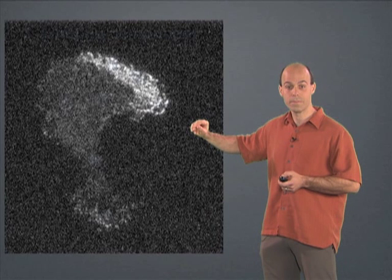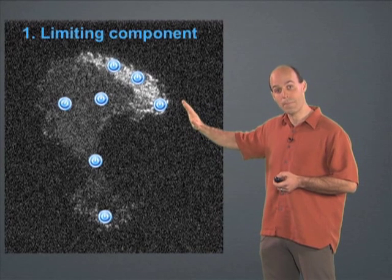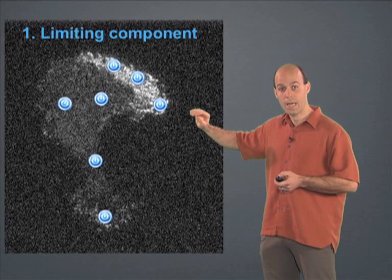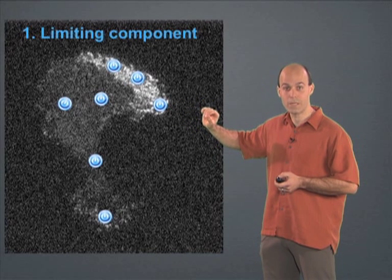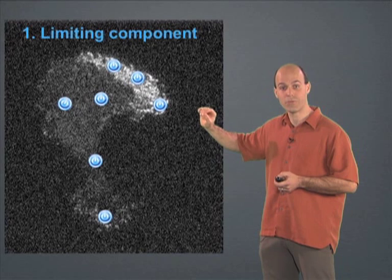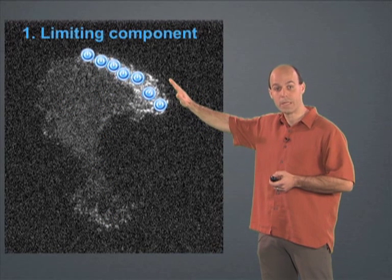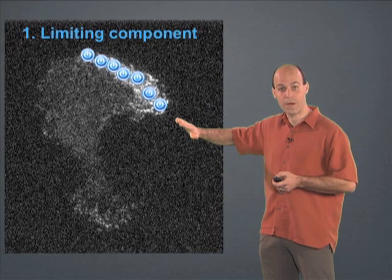The first model postulates that there's some limiting component of the polarity apparatus. So there's only enough machinery for a single leading edge to form. Once a leading edge forms, this nascent leading edge sequesters the limiting component and prevents other regions of the cell from responding.